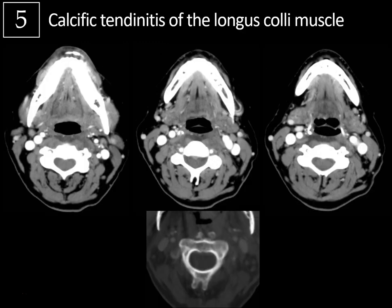Case five: calcific tendinitis of the longus coli muscle will have a retropharyngeal effusion located anterior to the longus coli muscles and posterior to the pharyngeal mucosal space. It should not have rim enhancement as a retropharyngeal abscess would. You should have pathognomonic calcification due to hydroxyapatite crystal deposition in the superior tendon fibers of the longus coli muscles. This is treated with NSAIDs.